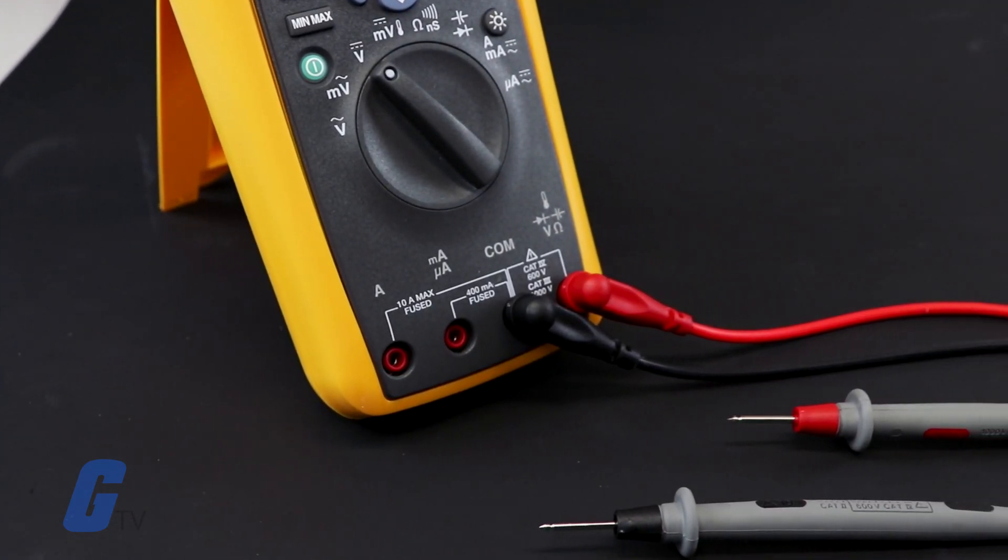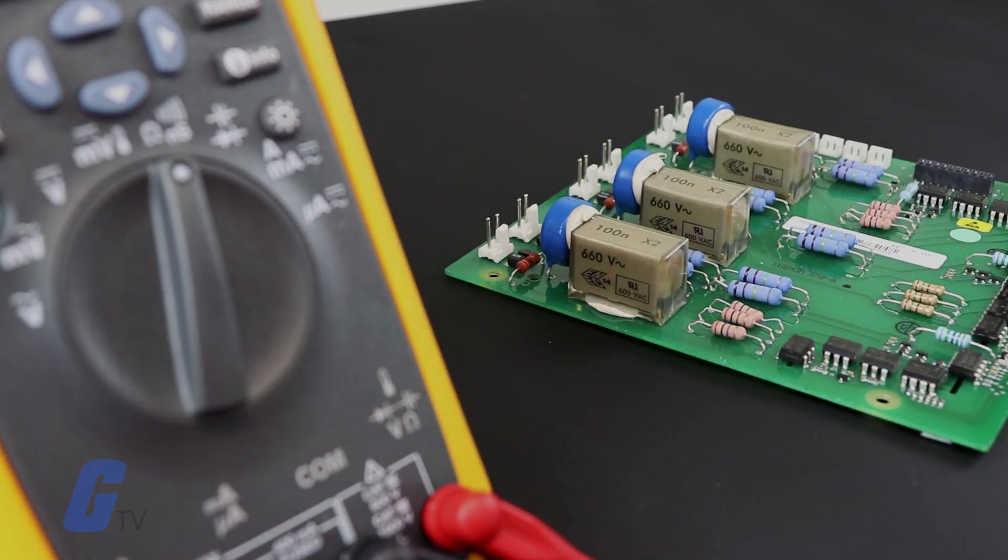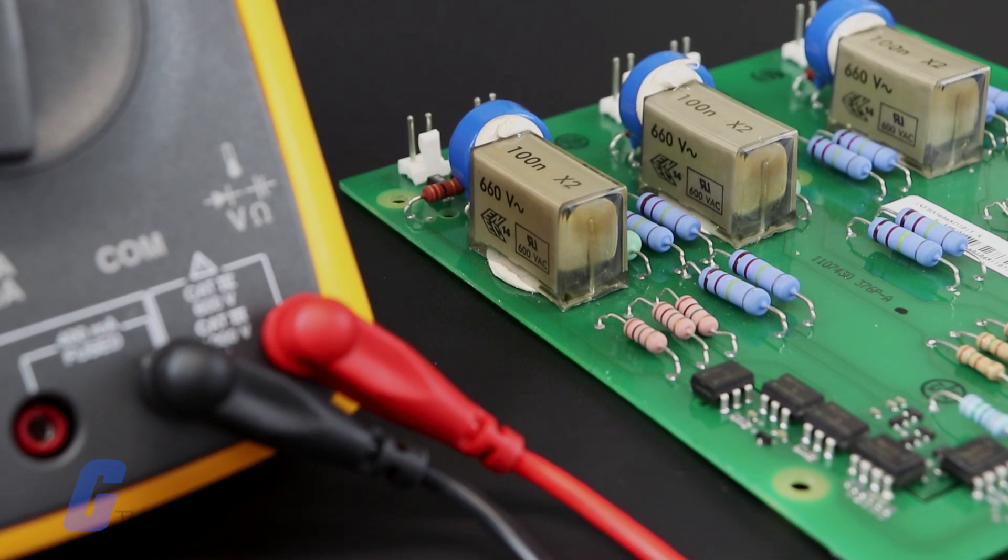To measure ohms or resistance with a multimeter, start by verifying that no current is flowing through the circuit or component that you would like to test.